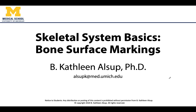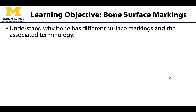Hello all, this is Dr. Alsup, and in this video we will be exploring the terminology associated with all those bumps and lumps and holes that you can see on bone. So we can stop saying bumps and holes and use the fancy scientific names. Also, part of this video we will really begin exploring the functional why these surface markings exist — what is the function of having a hole in the skull, or what is the function of having that bump, and why is it larger in certain individuals and smaller in certain individuals?